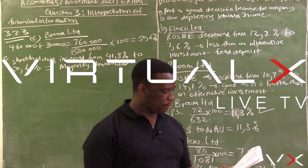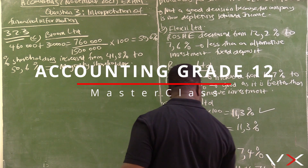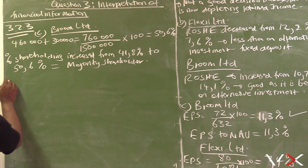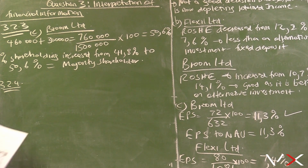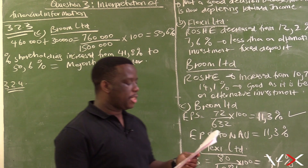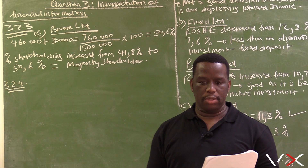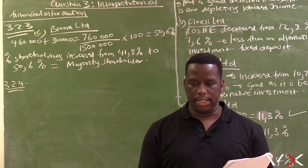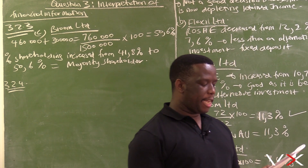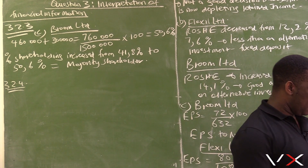Question 3.2.4 is the last question. It covers financing strategies and gearing. The directors of each company have taken deliberate decisions that are reflected in the cash flow statement. Explain the decisions taken by the directors of Broom Ltd and how these will benefit the company.